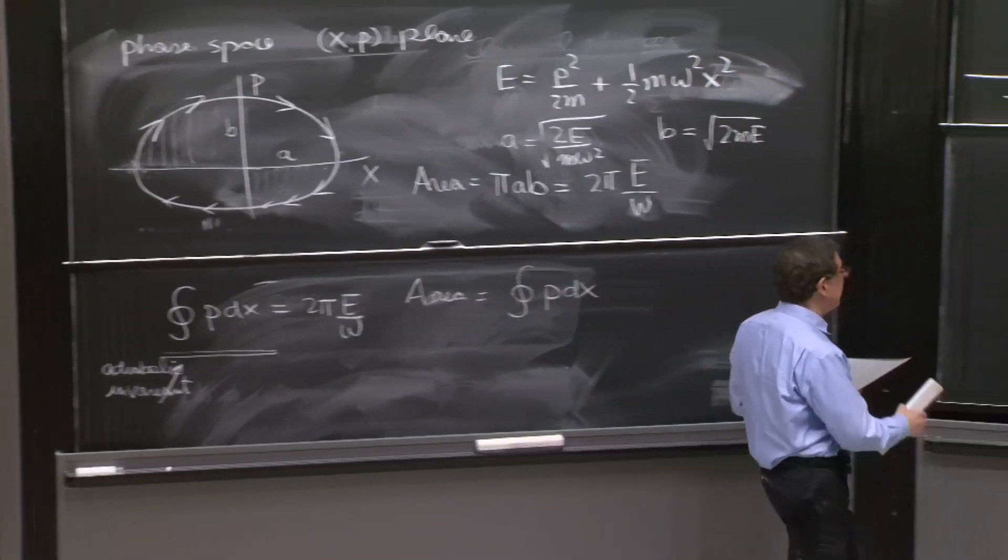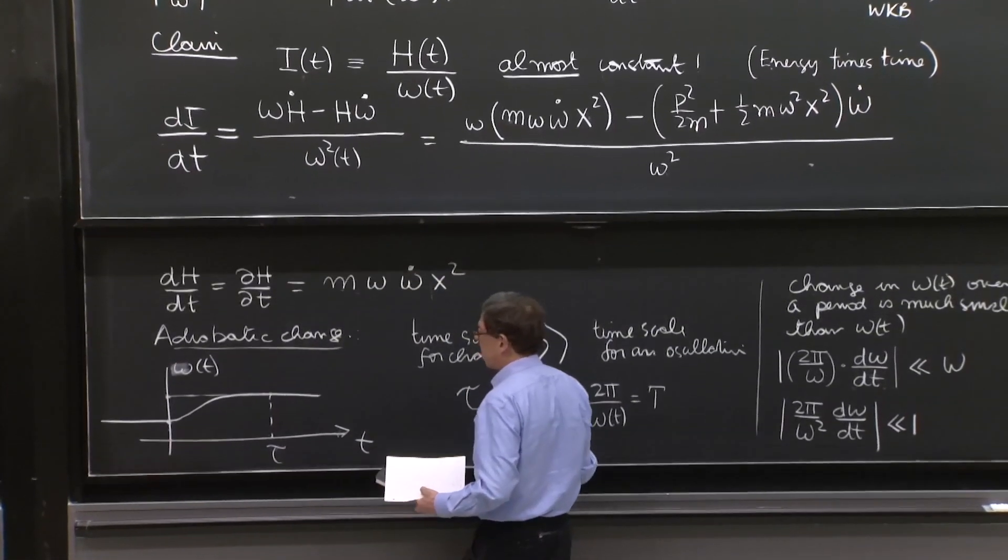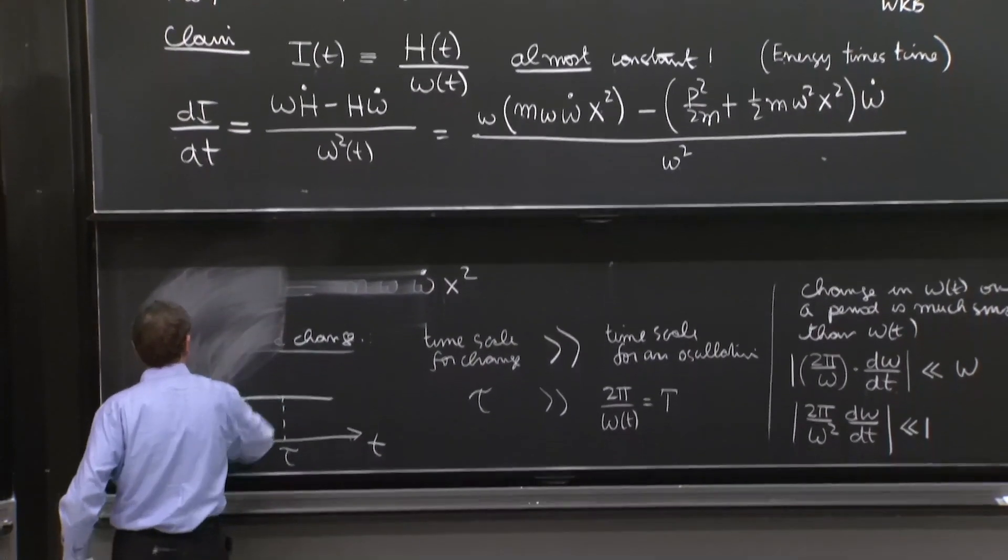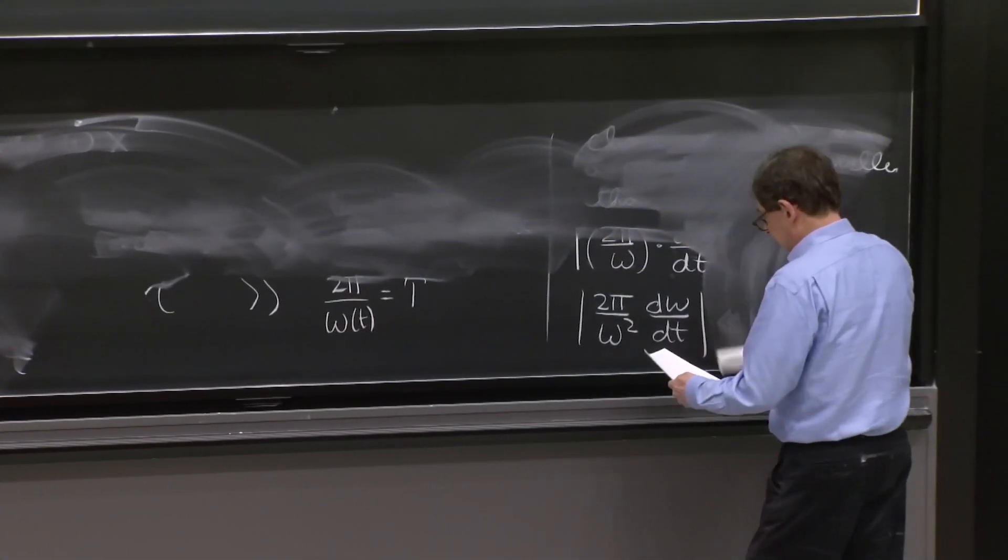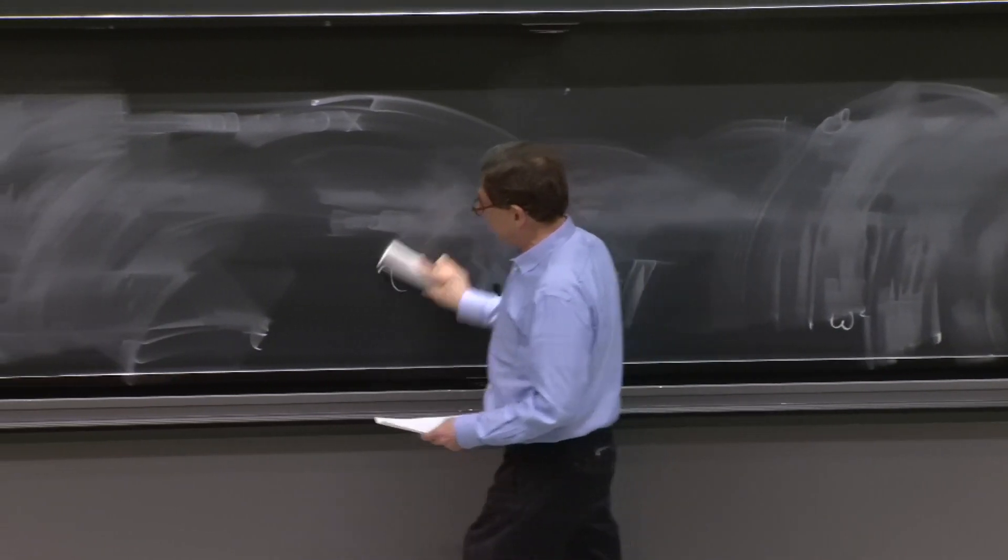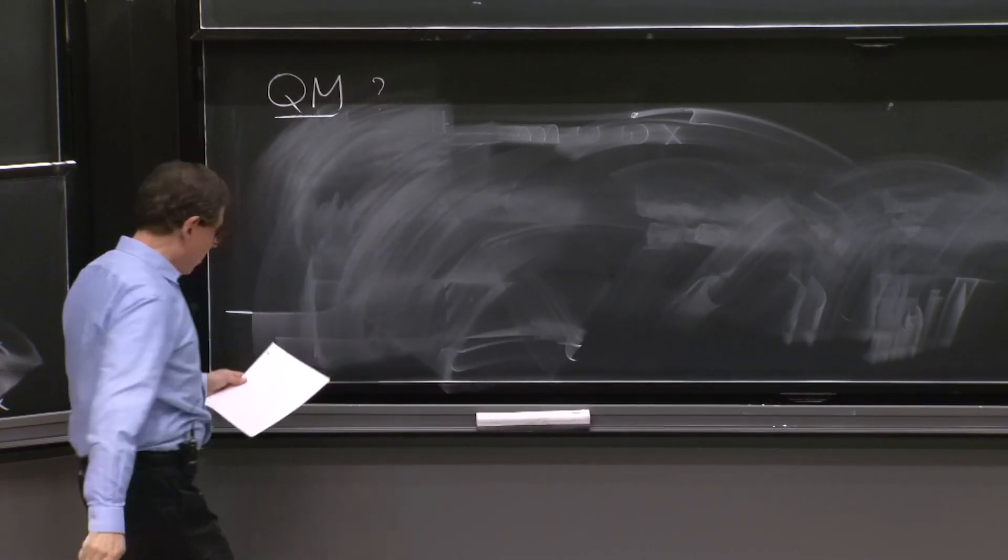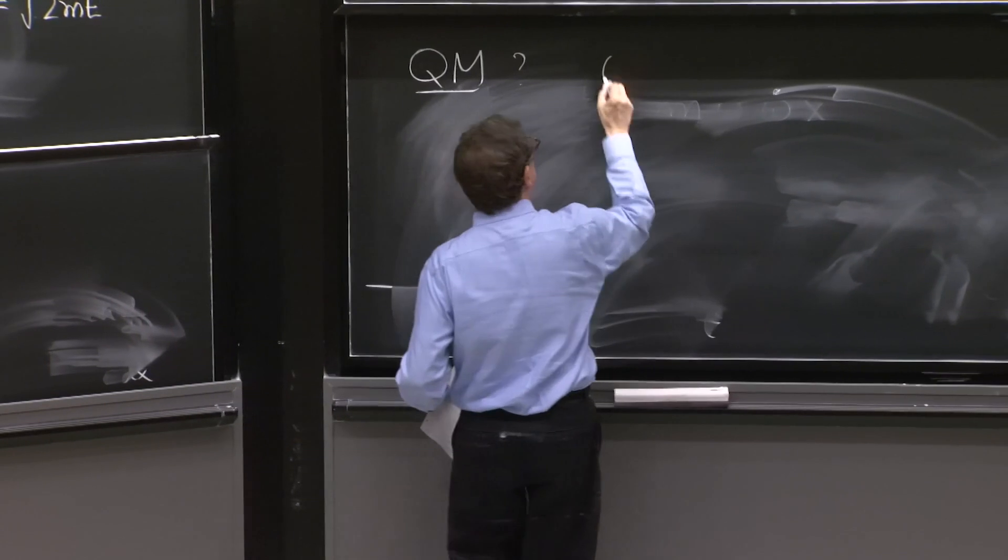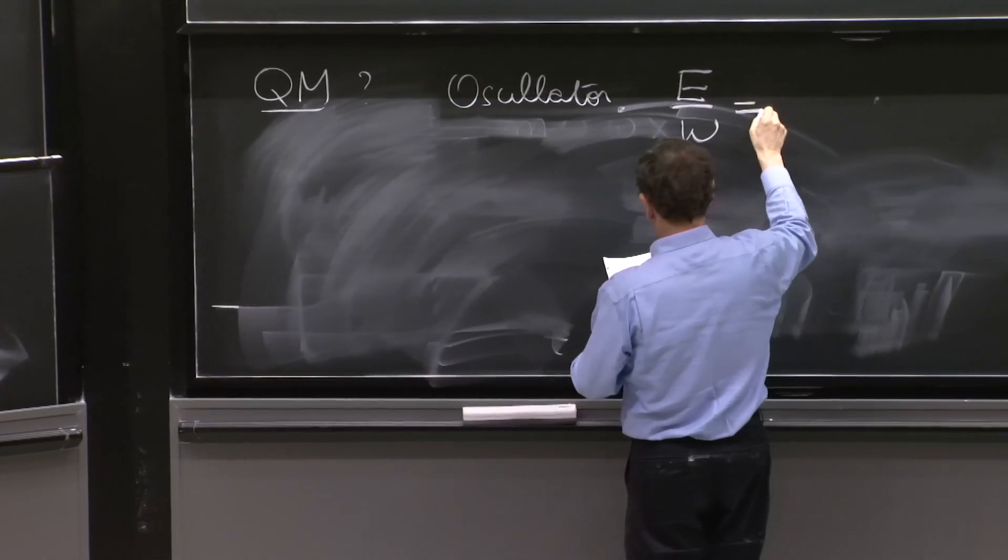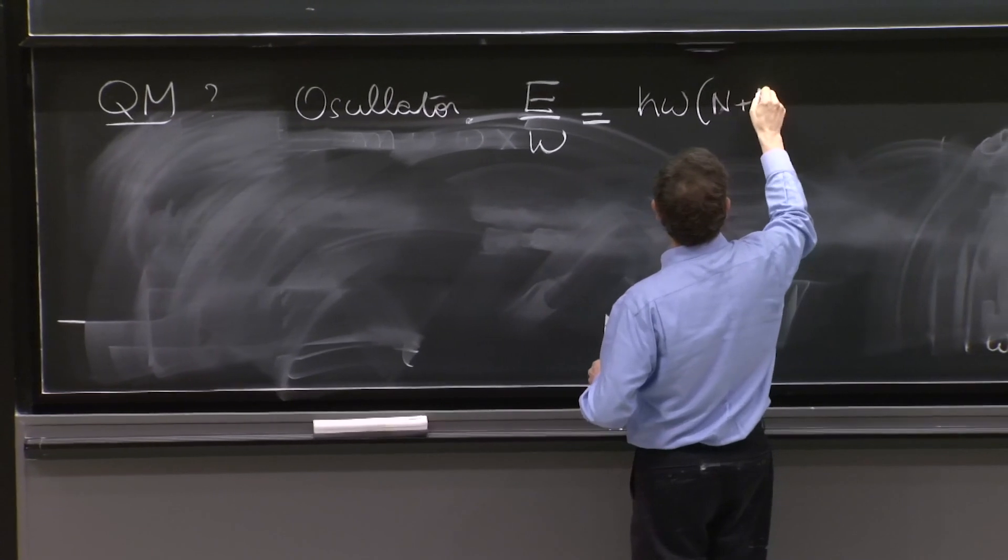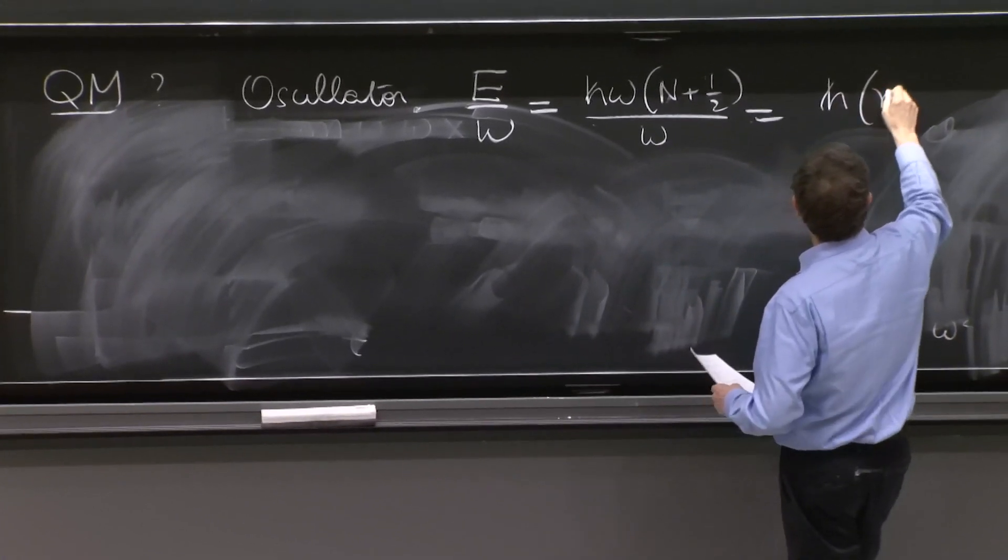But let's go quantum mechanical. It's the analogies that we mentioned before. Let's use them. So here we go. We've said a little about this. And we'll say a bit more. So for quantum mechanics, what do we have? Well, we had the oscillator. We mentioned it. And we said that E over omega was h bar omega occupation number plus 1 half over omega. And it's therefore h bar n plus 1 half.